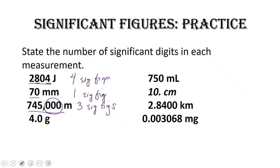4.0 grams: this is a trailing zero, but because this number has a decimal place, it is also significant — so we've got two sig figs. 750 milliliters: we have a trailing zero, but there is no decimal place, so that last zero is not significant — we have two sig figs. 10. centimeters: the decimal allows us to know that this zero is significant — it's a placeholder, but my instrument can read to that ones place, so this number also has two sig figs.